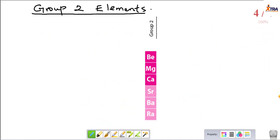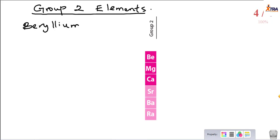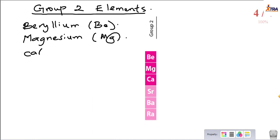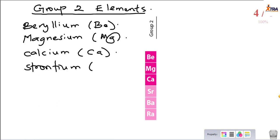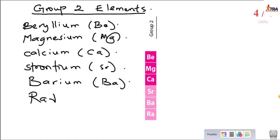Calling them the beryllium family tells us that beryllium is the first member of the group. The other members in group 2 are: magnesium (Mg), calcium (Ca), strontium (Sr), barium (Ba), and radium (Ra). These elements make up group 2 of the periodic table, and beryllium being the first, we call them the beryllium family.